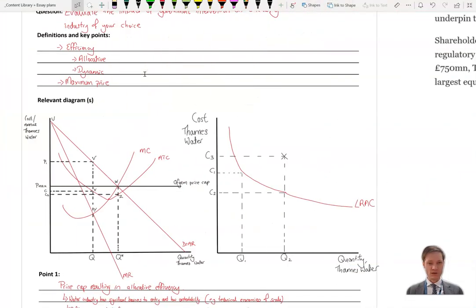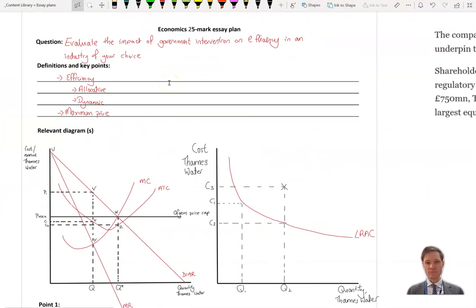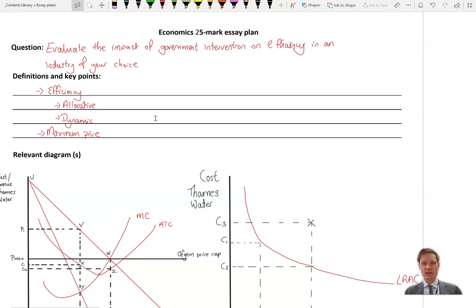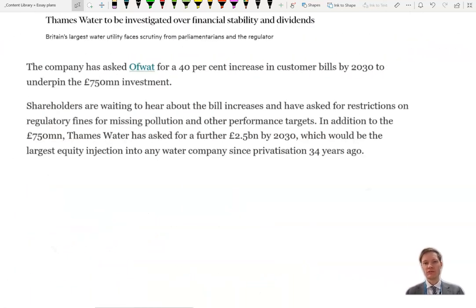Hello, today we're going to be talking about government intervention in markets and its impact on efficiency in the industry of your choice. So the industry we're going to be looking at today is Thames Water. It's been in the news a lot recently for some of the sewage spills, some of the dividends that it's been paying its shareholders and price rises in the recent year.